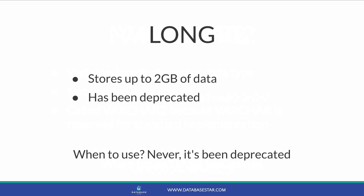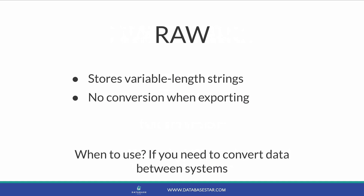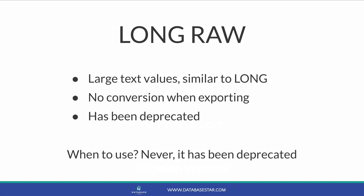The LONG data type can store up to 2GB of text data. However, it has been deprecated by Oracle and only remains for backwards compatibility, so I would not recommend using it — use BLOB or CLOB instead. The RAW data type is similar to VARCHAR2 in that it stores variable length strings, but there is no character conversion performed when you import or export between systems, making it a good choice if you have concerns about data transformation. The LONG RAW data type is similar to LONG but stored in raw form, however it has also been deprecated — use BLOB or BFILE instead.